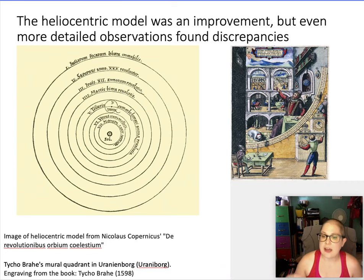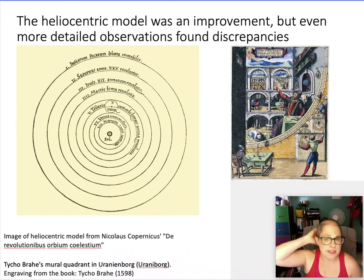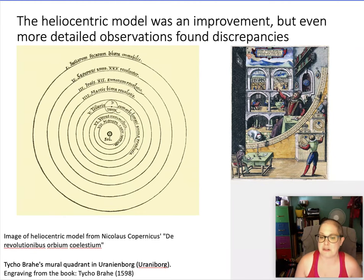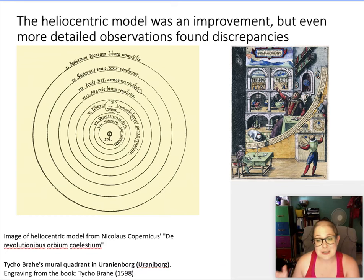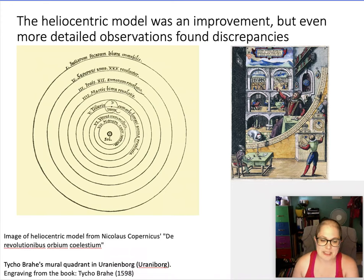Tycho Brahe was an astronomer who mapped very precise positions of the planets with very precise measurements. The heliocentric model of Copernicus didn't quite match up — in his model all of the planets orbited the sun in perfect circles. Tycho Brahe's data went to another astronomer by the name of Johannes Kepler, and he took that data and formulated what we now call Kepler's three laws.